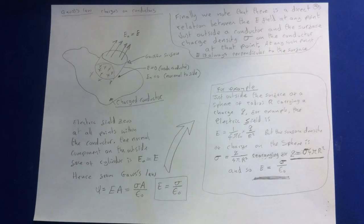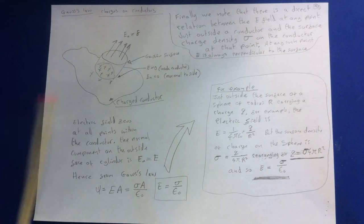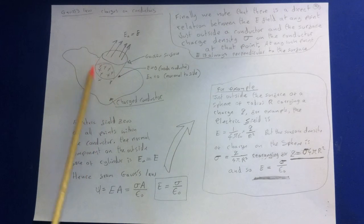Finally, we know that there is a direct relation between the E field at any point just outside a conductor and the surface charge density, sigma, on the conductor at that point. At any such point, the electric field is always perpendicular to the surface. To find a relation between sigma and the electric field, we construct a Gaussian surface in the form of a small cylinder like so.